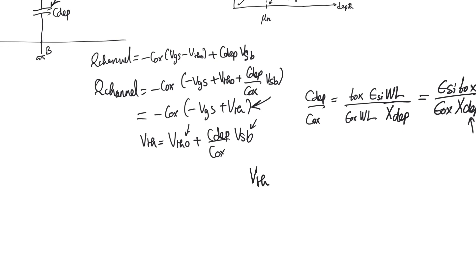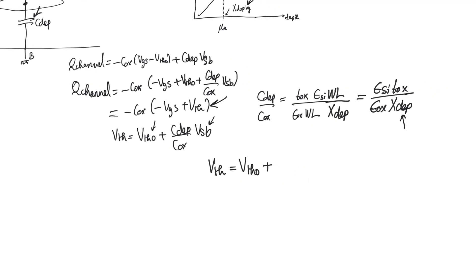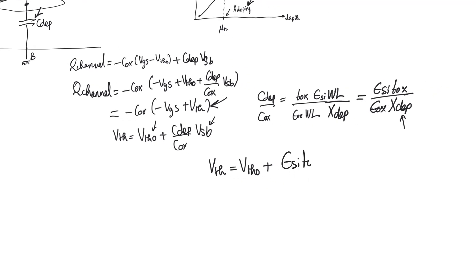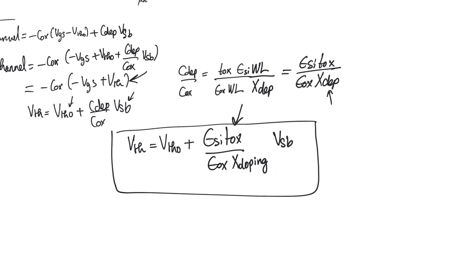And therefore, we can write the expression V-threshold is equal to V-threshold naught plus C-depletion by C-oxide is going to be epsilon silicon T-oxide divided by epsilon silicon times X-doping multiplied by VSB. Everything here is a constant. And therefore, this whole thing is a constant. And therefore, we see here a new form of body effect. This is steep retrograde doping body effect. So this is a much stronger body effect than the normal body effect we are used to in long channel transistors. And it actually has a linear impact on threshold voltage.